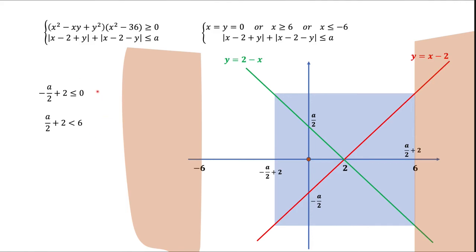Combining these two conditions together, we get the final answer: A should be greater than or equal to 4 and less than 8. A final thought about A equals 0 or negative A's. When A equals 0, the square shrinks to a single point. We can see this directly from the inequality, because the left-hand side is a sum of two non-negative numbers. For that sum to be less than or equal to zero, both absolute values must equal zero, which gives the solution X equals 2 and Y equals 0.